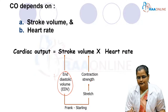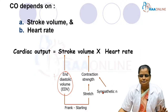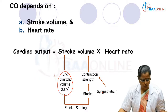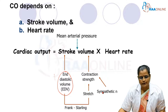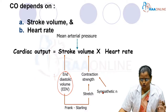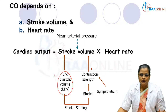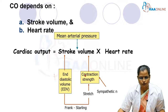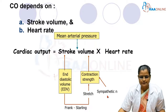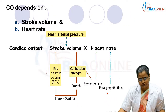If the end-diastolic volume is more, the contraction strength of the heart will also be more, leading to an increase in stroke volume. Sympathetic stimulation also increases contraction strength and stroke volume. Whereas mean arterial pressure has a negative influence: if mean arterial pressure is high, the left ventricle must pump against high pressure in the aorta, decreasing stroke volume. Sympathetic stimulation increases heart rate, while parasympathetic stimulation decreases heart rate.